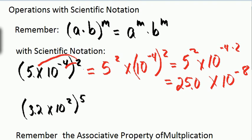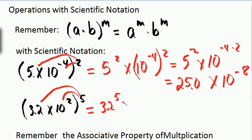Our next example: 3.2 times 10 to the second, all raised to the 5th power. Again, I distribute my power to each of my products. So I have 3.2 raised to the 5th power times 10 squared raised to the 5th power.